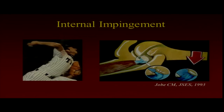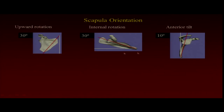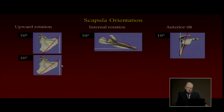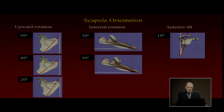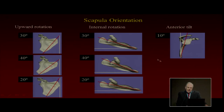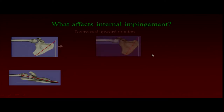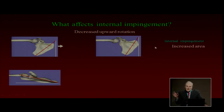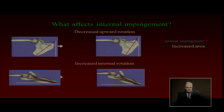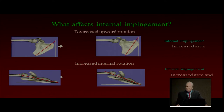Dr. Mihata did several very interesting pieces of work. He looked at the scapula and the normal orientation for upward rotation, internal rotation, and anterior tilt. He then changed these positions and looked at the amount of internal impingement — changing to more or less upward rotation and more or less internal rotation. He found that decreased upward rotation increases the area of internal impingement, and increased internal rotation increases the area and the pressure. So internal rotation creates increased pressure, just like the five degrees of anterior tilt. You see all this combination — protraction, anterior tilt, loss of upward rotation, and internal rotation — creates extra load on the structures inside the joint.